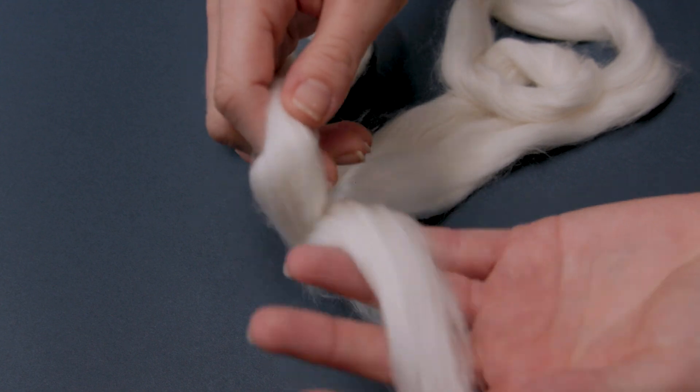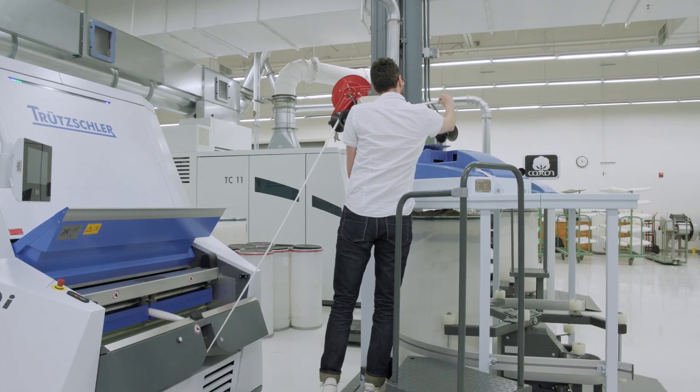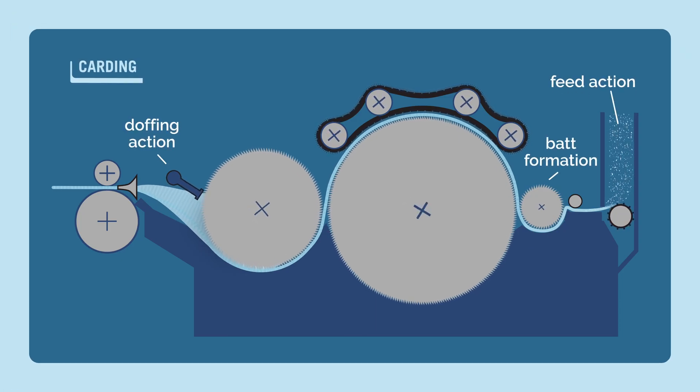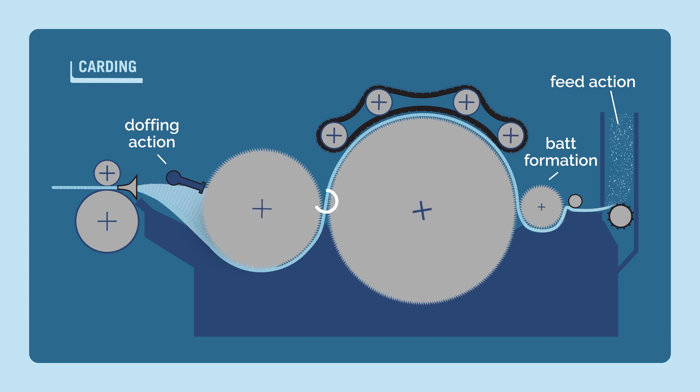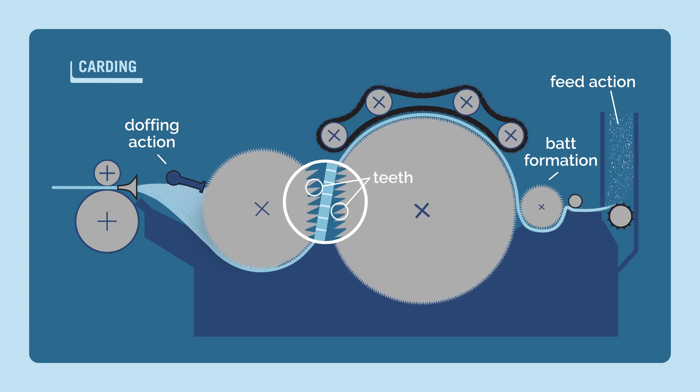The card is made up of a series of cylinders which are wire wound. This wire has tiny teeth cut into it and each tooth serves to transport a small number of fibers through the machine.